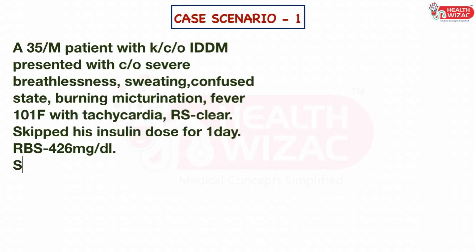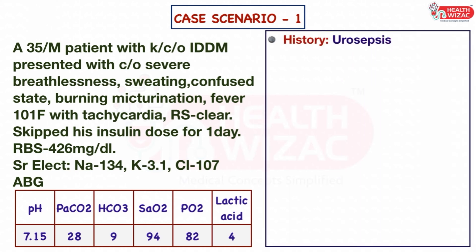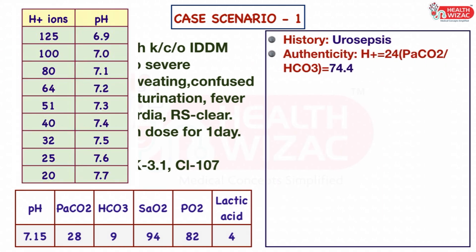Case Scenario 1: A 35-year-old male with known insulin-dependent diabetes mellitus presented with severe breathlessness, sweating, confused state, burning micturition, fever of 101°F, and tachycardia. Respiratory system was clear. He skipped his insulin dose for one day. RBS was 426 mg/dL. Analyzing this ABG sample: Step 1 — history is suggestive of urosepsis. Step 2 — calculated H+ ion value is 74.4, which matches the pH range, and hence the sample is authentic.